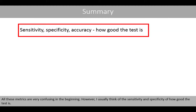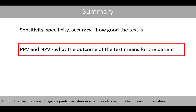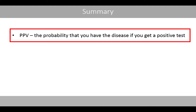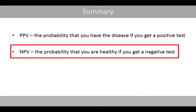All these metrics are very confusing in the beginning. However, I usually think of sensitivity and specificity as how good the test is, and think of the positive and negative predictive values as what the outcome of the test means for the patient. The positive predictive value can be defined as the probability that you have the disease if you get a positive test, whereas the negative predictive value is the probability that you are healthy if you get a negative test.